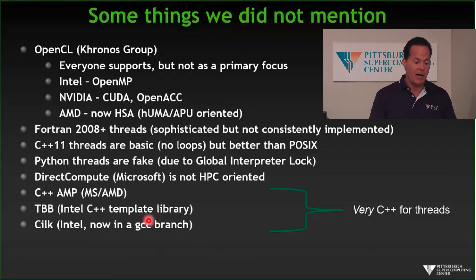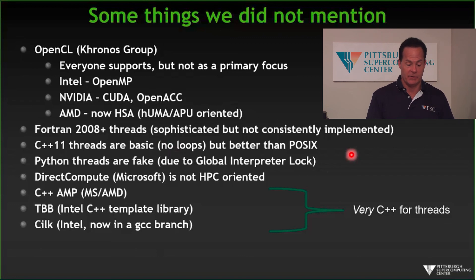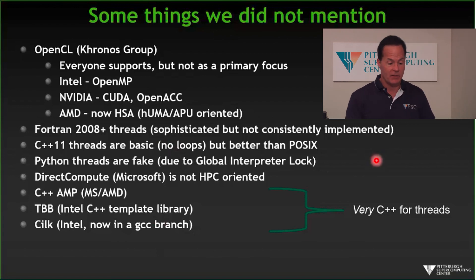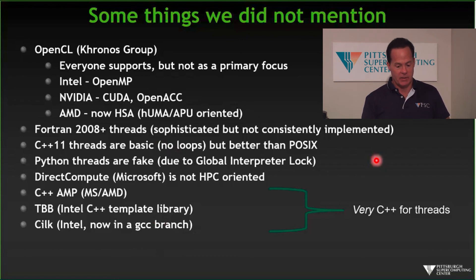Intel has two very competing threaded libraries — Threaded Building Blocks and Cilk — both usable, well-supported, and very C++ oriented. But they're competing with themselves, breaking up whatever mind share they have, and I'd be hard pressed to say why I'd commit to one for a long-term project. OpenMP sits right in the middle, is a well-supported standard, and you won't be cursing me five years from now for investing in it — whereas picking some of the alternatives might leave you upset with whoever guided you down that path.